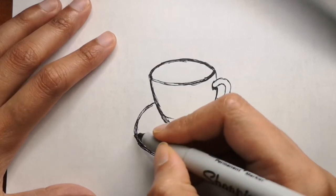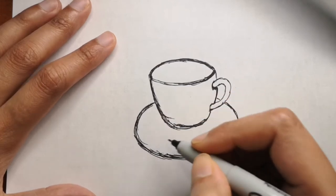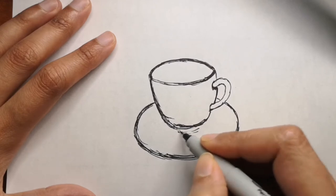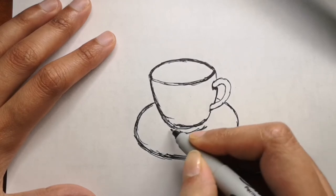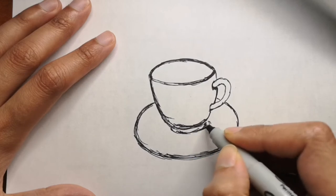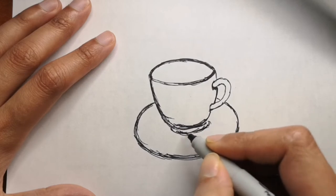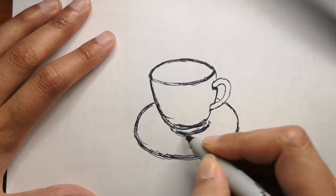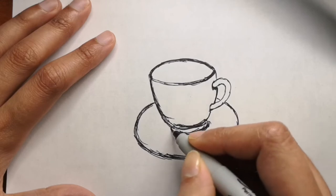A teapot is a container used to make and serve beverages, most commonly tea. They are generally made of steel, ceramic, or glass, while bronze and other metals have been commonly used in the past as well.